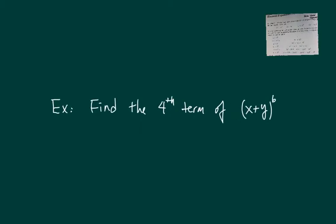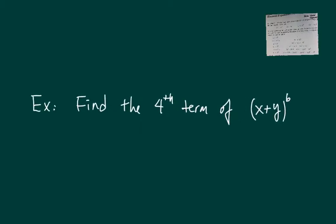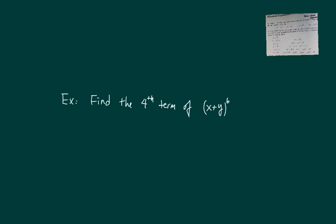Here's an exam question I put recently. Find the fourth term of x plus y to the sixth power. Some of my students went about the very long way by expanding this entirely. Multiply it out six times. Now you don't want to do that in the test. That takes way too long and since I'm only asking for one term, I'm looking for a shortcut. Let's get to it.